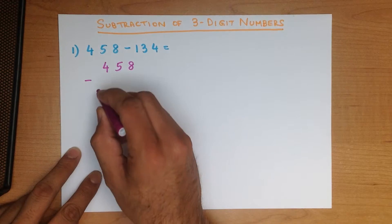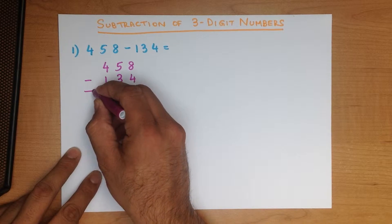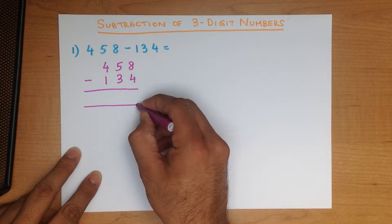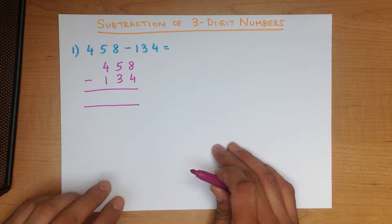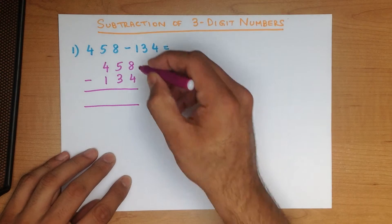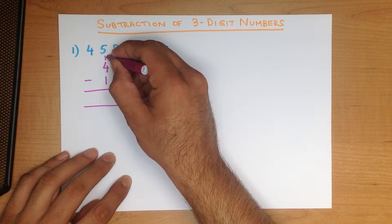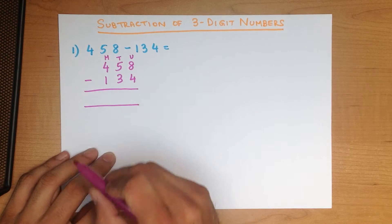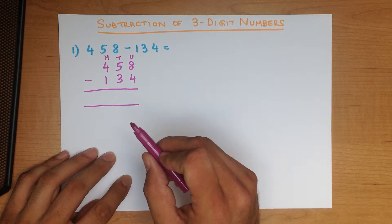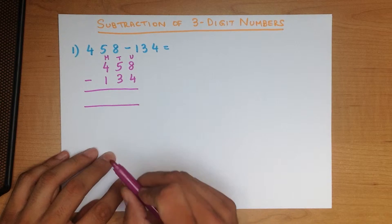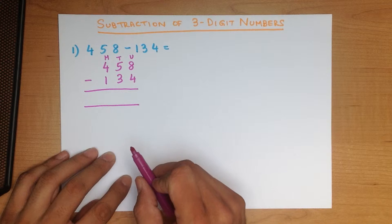458 minus 134. Let's put a nice big equal sign at the bottom. We can label the columns — we don't have to, but we can: units, tens, hundreds. Now, the first thing we do is we subtract the numbers column by column.